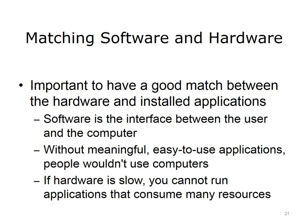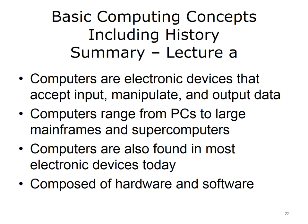Computer software and hardware work together to provide a system that is usable for people. Software enables the user to interact with a computer. Without meaningful, easy-to-use applications, people would not use computers. If the hardware is slow, large applications will not run well, if at all. So, it is important to have a balance of hardware that can support the type of applications that you want to run, and applications that are meaningful as well as easy to use. This concludes Lecture A of Basic Computing Concepts Including History. In summary, computers are electronic devices that accept input from multiple sources, manipulate, calculate, and output data. Computers range from personal computers, or PCs, to large mainframes and supercomputers. Computers are also found in most electronic devices today. All computers are composed of hardware and software. Hardware is the physical equipment of the computer, and software is the applications or programs that we run on computers.